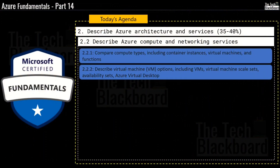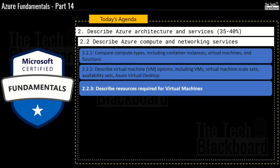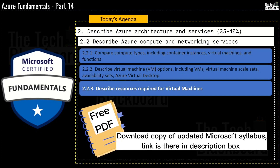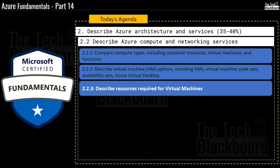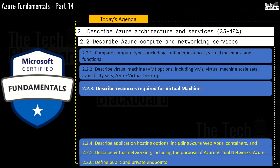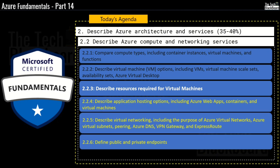Hello and welcome back to the Tech Blackboard. In today's video, we are going to understand all the common resources that are needed when dealing with Azure virtual machines, and this is our section 2.2.3. The link to download a free PDF file with the latest syllabus for the AZ-900 exam is right there in the description box. In the coming episodes, we are going to cover section 2.2.4, which is to describe application hosting options including Azure web apps, containers and virtual machines.